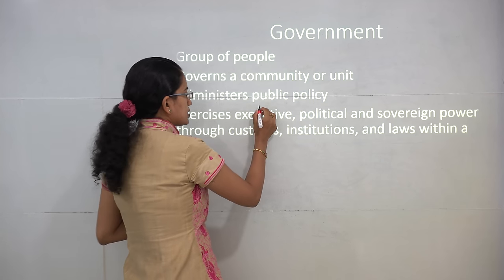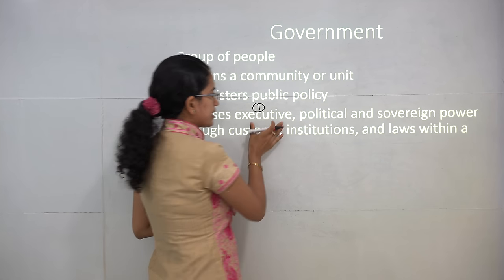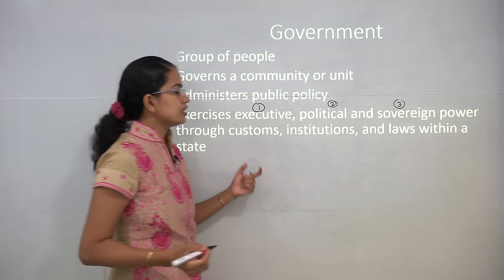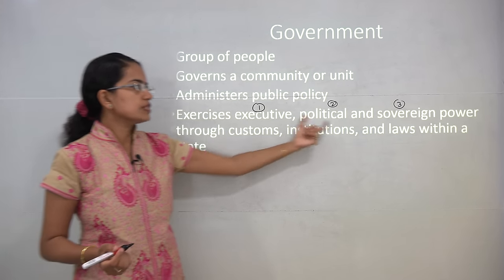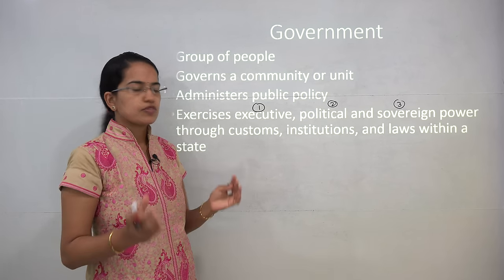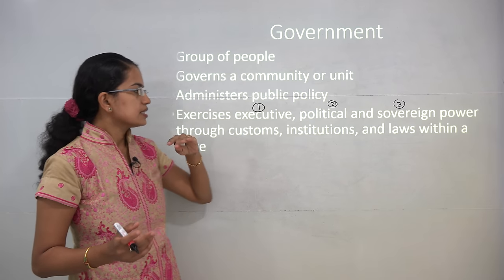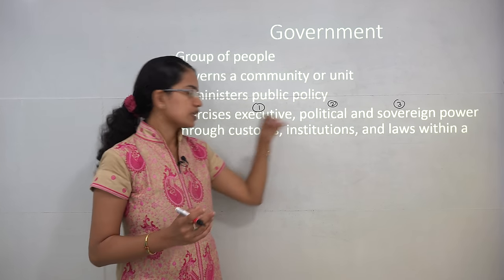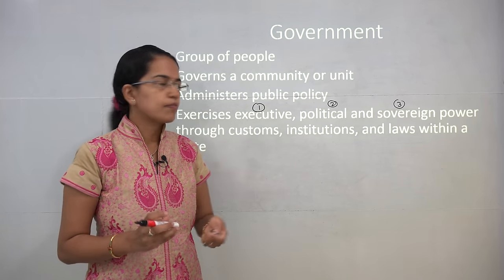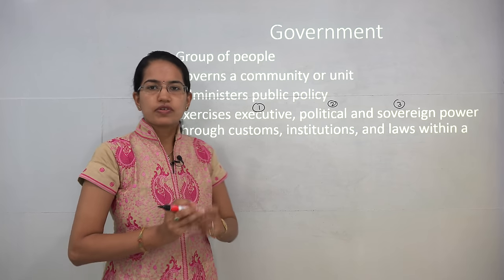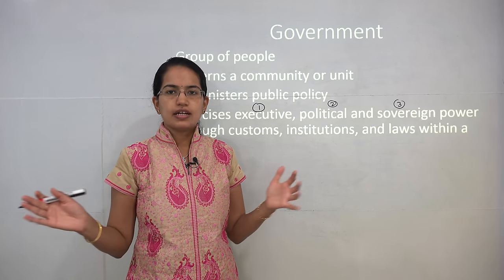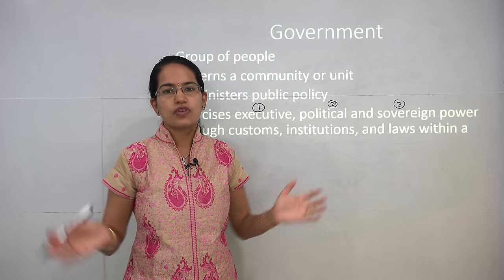What are the three basic works that they do? The first is the executive rule, the political rule, and the sovereign rule. These are the three basic roles that are performed within the existing system of society — that is, the existing institutions, the laws, and the customs. Keeping all those in mind, there are various executive orders that are passed, and various political and sovereign powers that are granted. All this comes under the definition or the area of government.